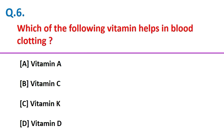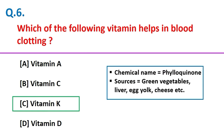Which of the following vitamins helps in blood clotting? Vitamin K. Friends, the chemical name of vitamin K is phylloquinone, and good sources are green vegetables, liver, egg yolk, cheese, etc.